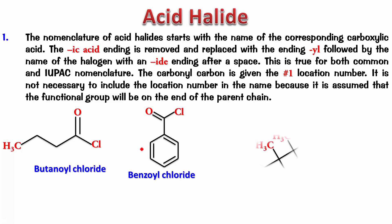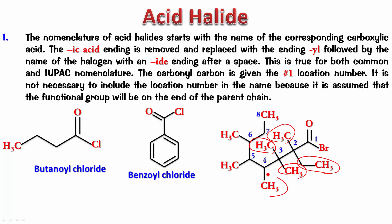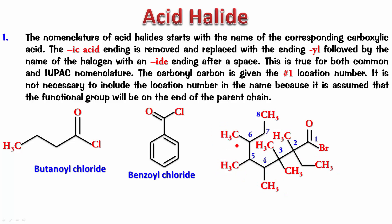Let's check out something a little more complicated. Look for the parent chain — pause and then play it back. The parent chain runs as shown, and obviously the numbering has to start from the carbonyl carbon: 1, 2, 3, 4, 5, 6, 7, 8. At position 2 you have a methyl and an ethyl. At position 3 you have two methyls. Positions 4, 5, and 6 each have a methyl — that's six methyls in total. So the name is 2-ethyl-2,3,3,4,5,6-hexamethyloctanoyl bromide.